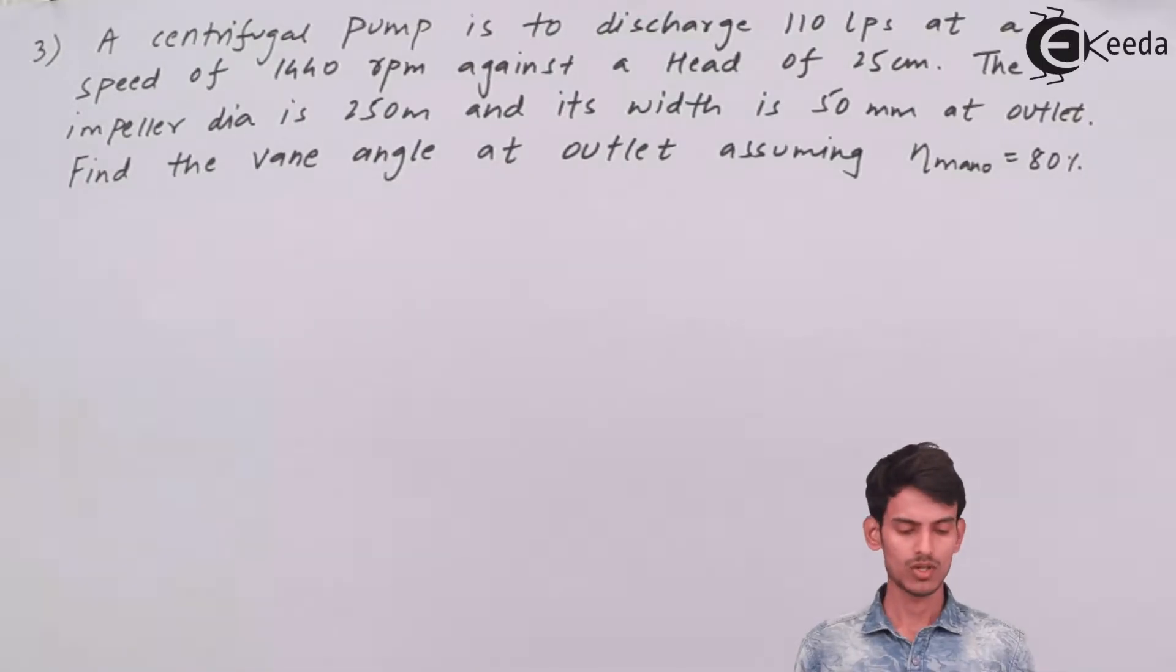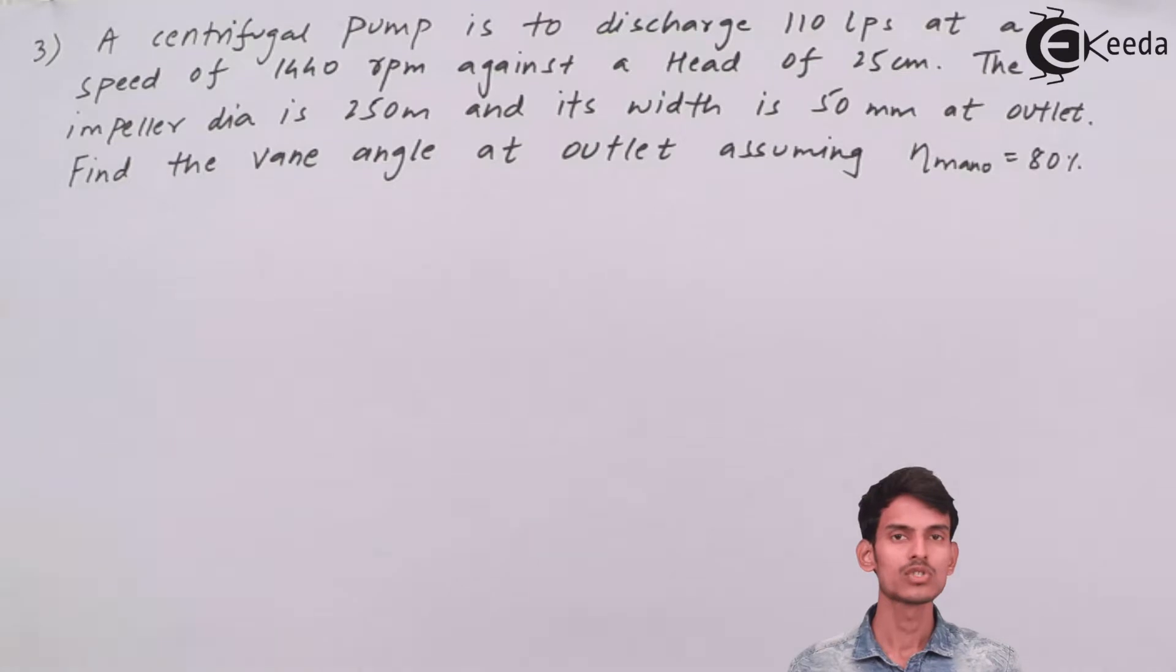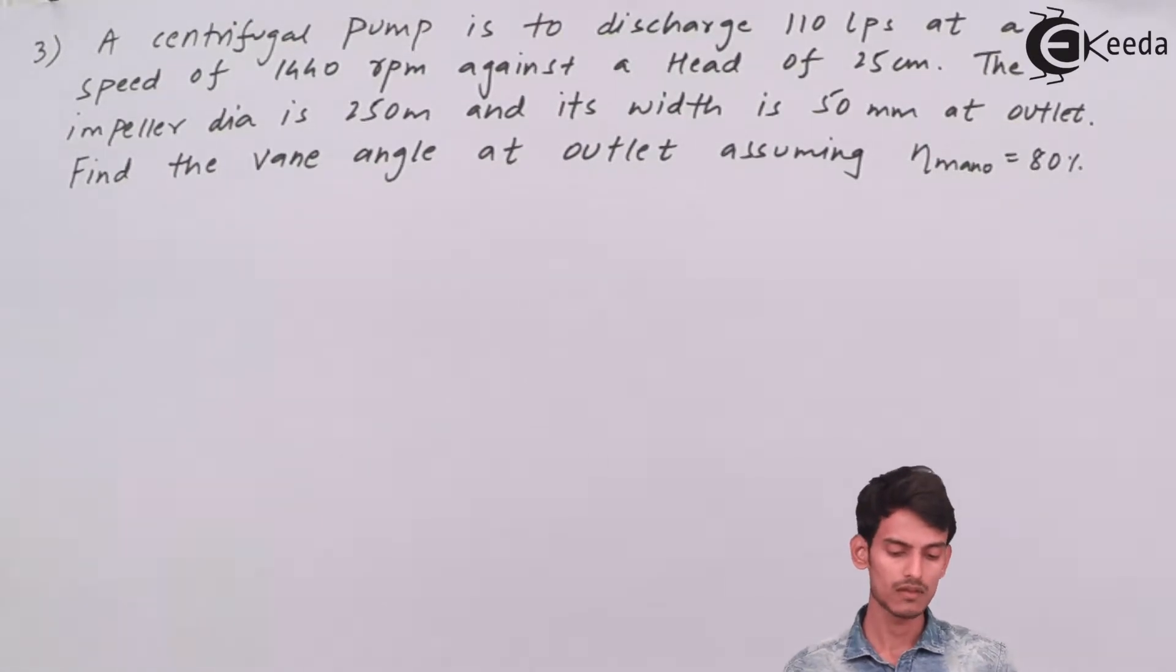Now let's move on to the third question. It's a little bit different from the questions we saw earlier. A centrifugal pump is to discharge 110 liters per second at a speed of 1440 rpm against a head of 25 centimeters. The impeller diameter is 250 millimeters and the width is 50 mm at the outlet side. Find the vane angle at the outlet, assuming the manometric efficiency is 80%.